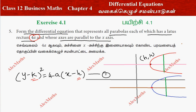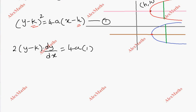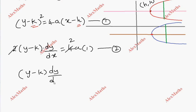Now we have to do the first differentiation. The first differentiation gives 2(y - k) multiplied by dy/dx, using the chain rule, equal to 4a, since 4a is a constant. Simplifying, we get (y - k) · dy/dx = 2a. This is the second equation.